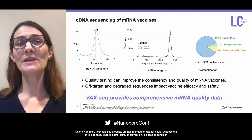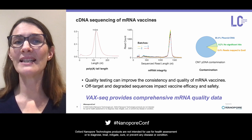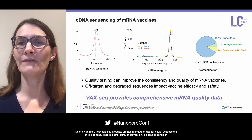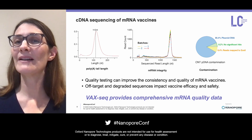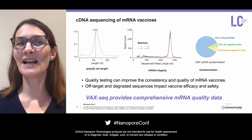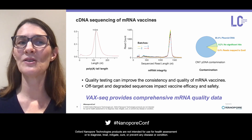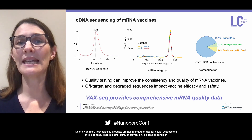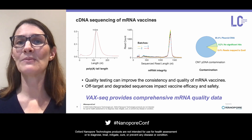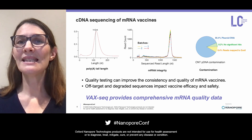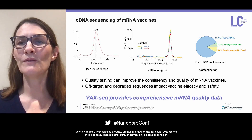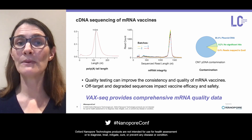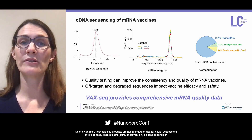Our test, which we term VAC-seq, also provides comprehensive information on poly-A tail length using tail finder analysis, mRNA integrity by analyzing the fragment length distribution, and the amount of contamination from organisms such as E. coli, which is used for plasmid propagation. This information is extremely helpful for refining mRNA manufacturing processes such as plasmid purification and in vitro transcription.